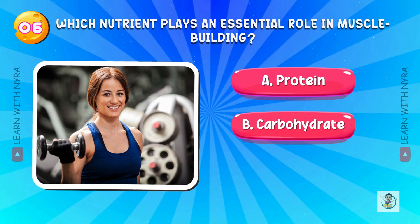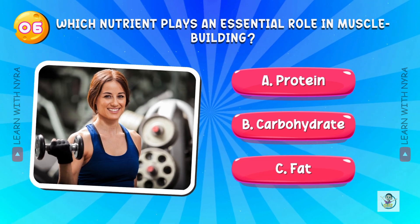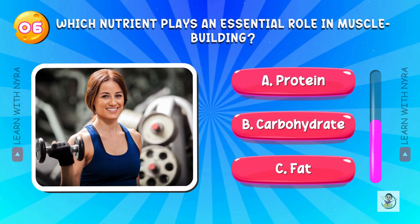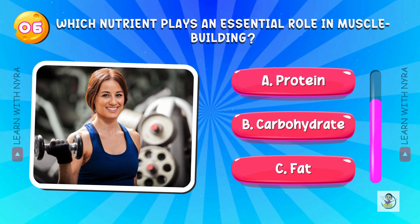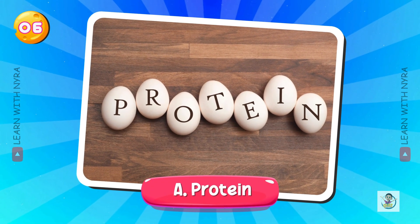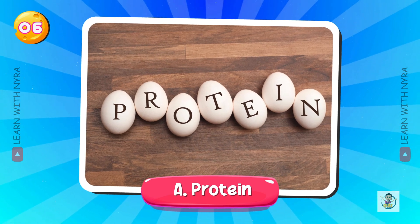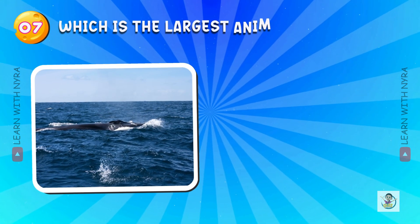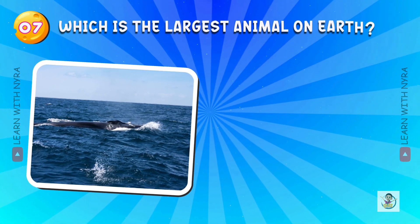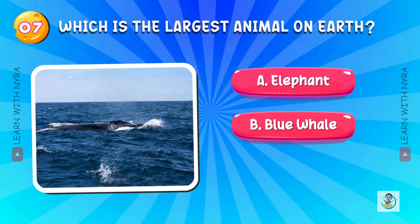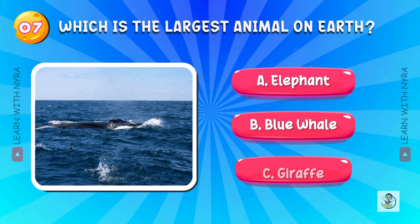Which nutrient plays an essential role in muscle building? A. Protein, B. Carbohydrate, C. Fat. And the answer is A. Protein. Which is the largest animal on earth? A. Elephant, B. Blue whale, C. Giraffe.